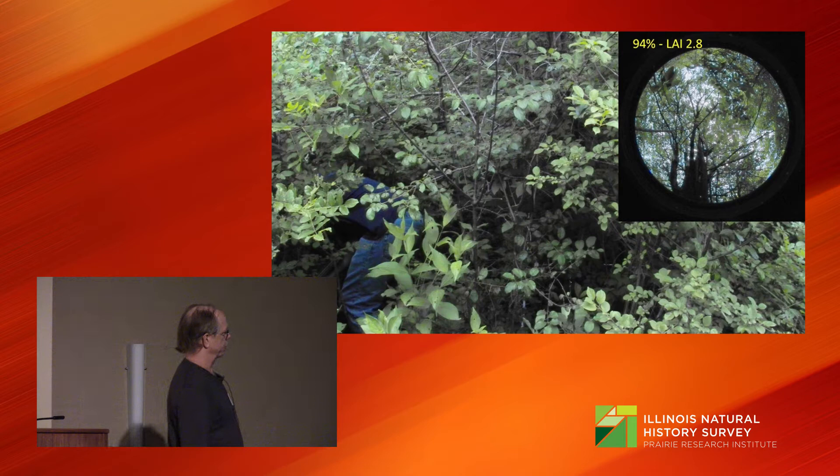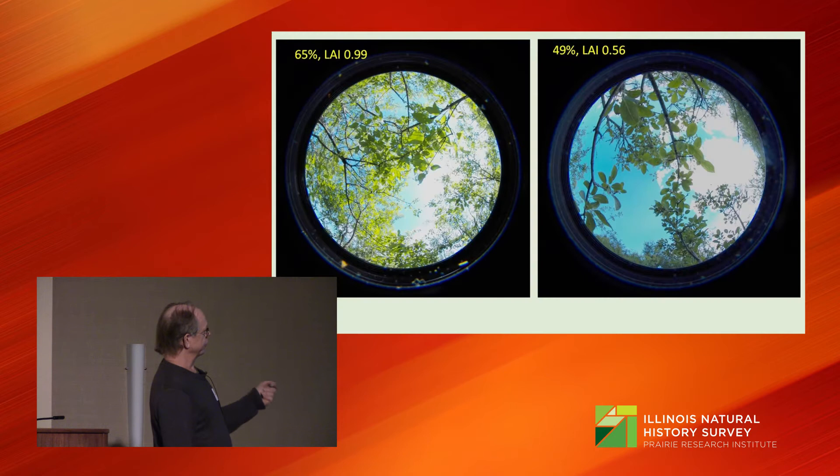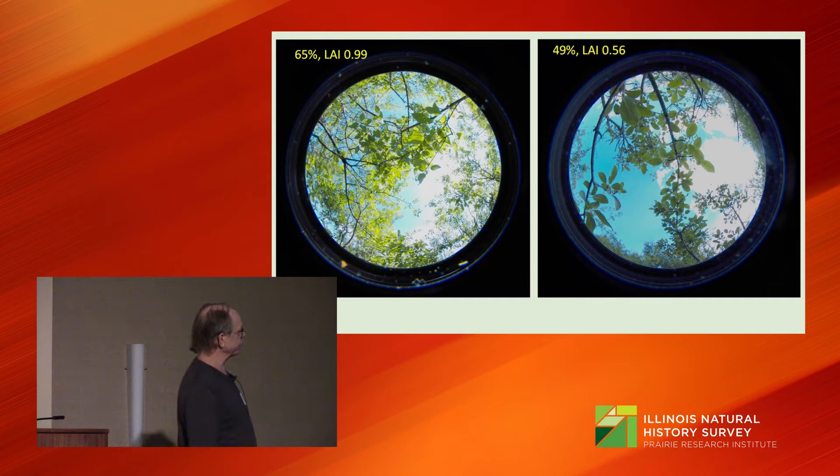These photos can be processed with software to calculate percent canopy cover and its core metric, the leaf area index. The leaf area index is the preferred system for analysis. Across the site, we have a wide range of canopy cover, from 94% canopy cover — where you can lose your graduate student pretty quickly — intermediate levels of encroachment, all the way down to more open stands where there's quite a rich prairie flora still persisting.